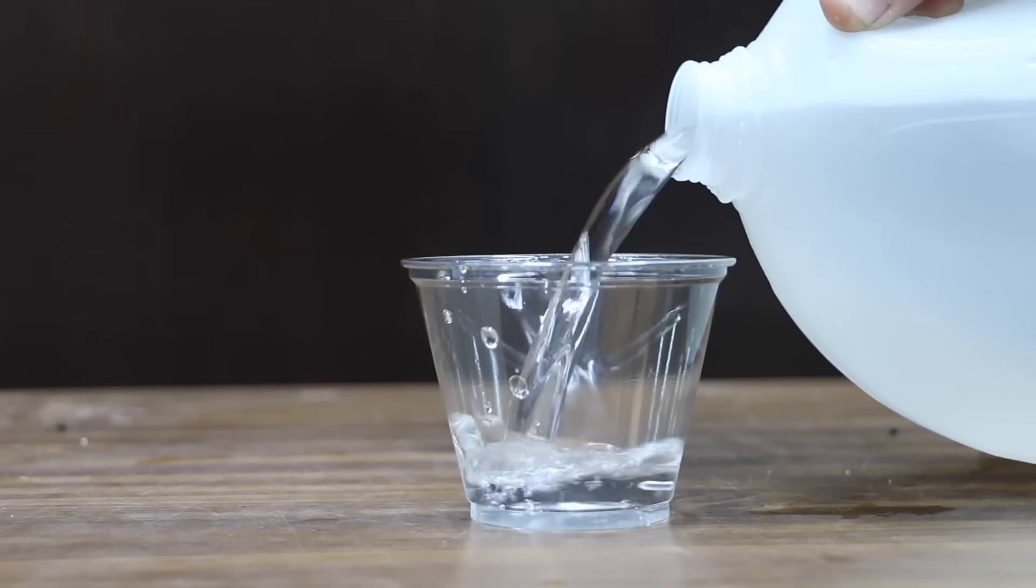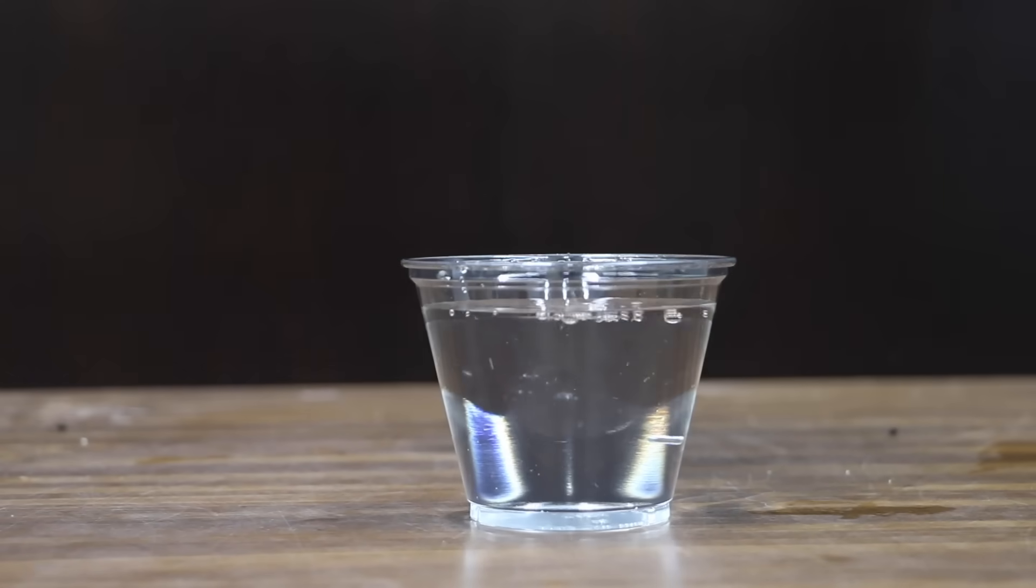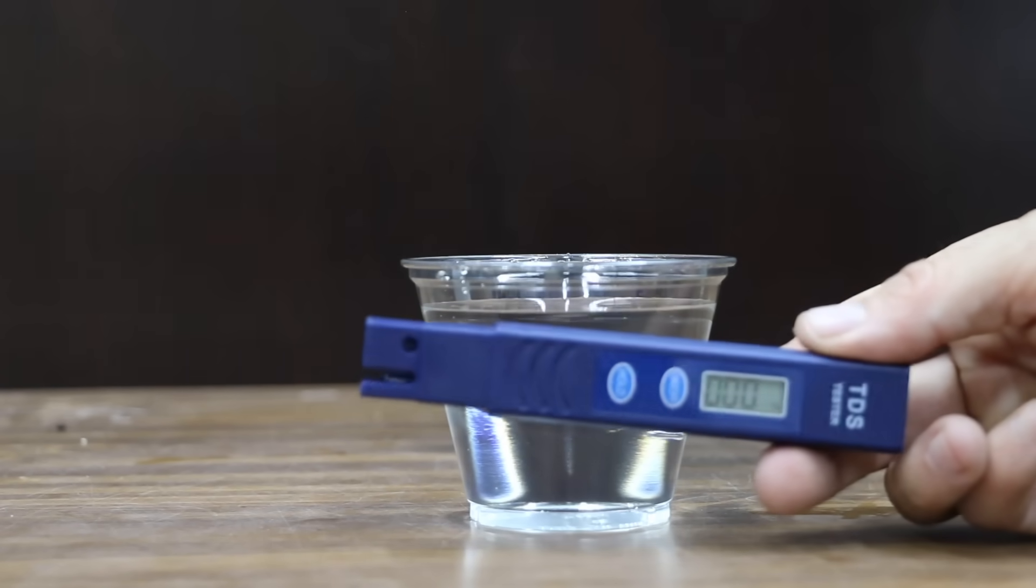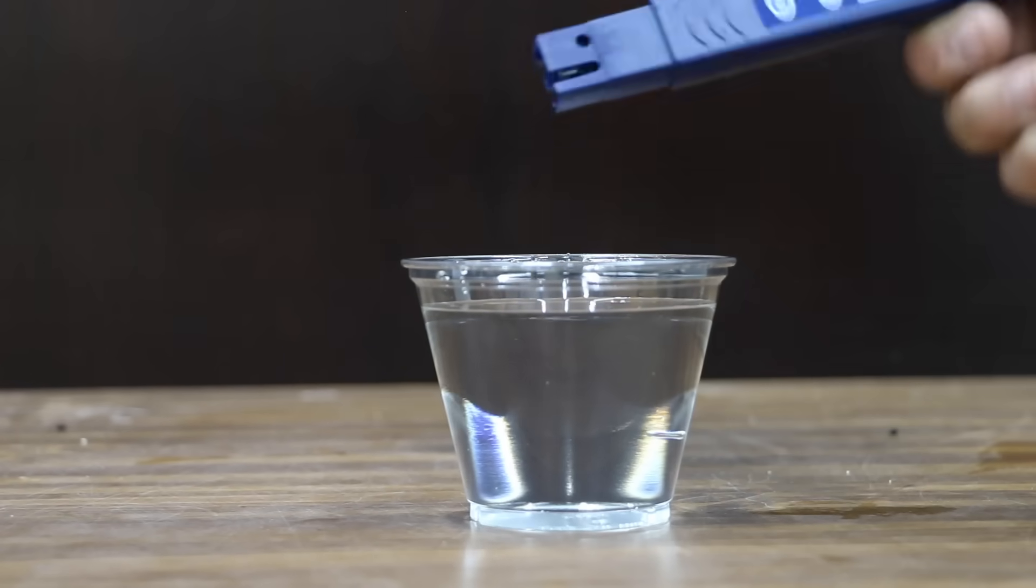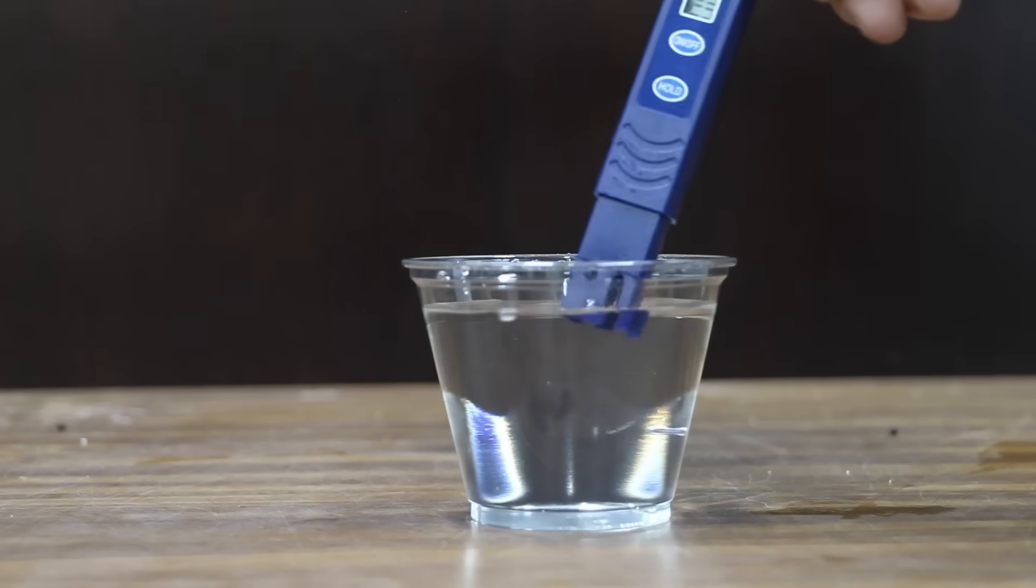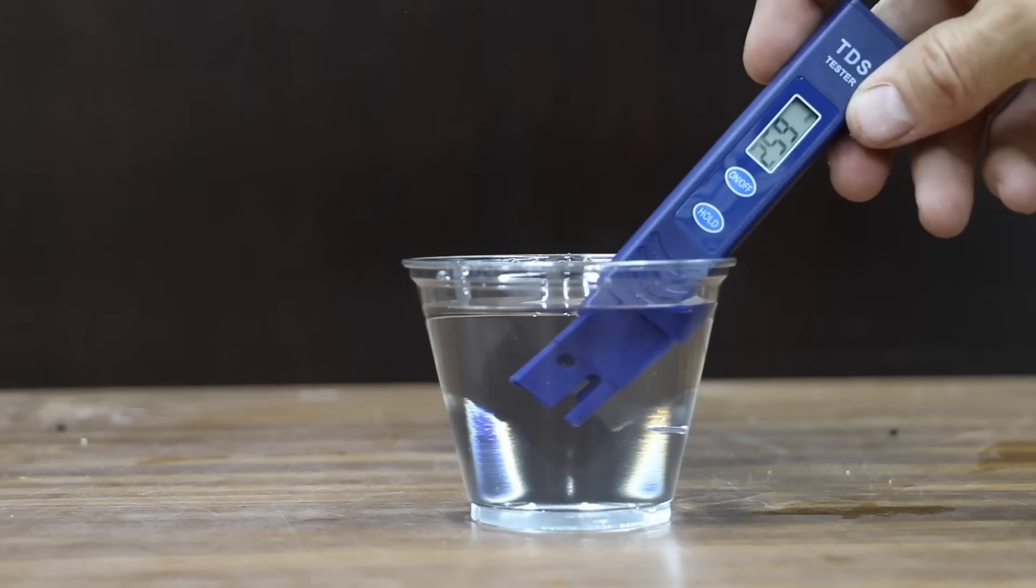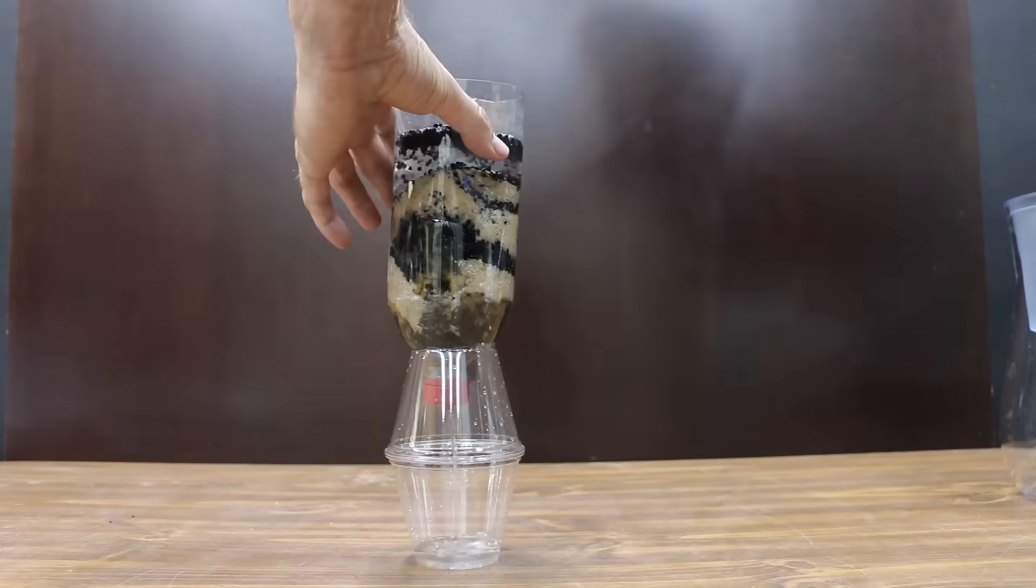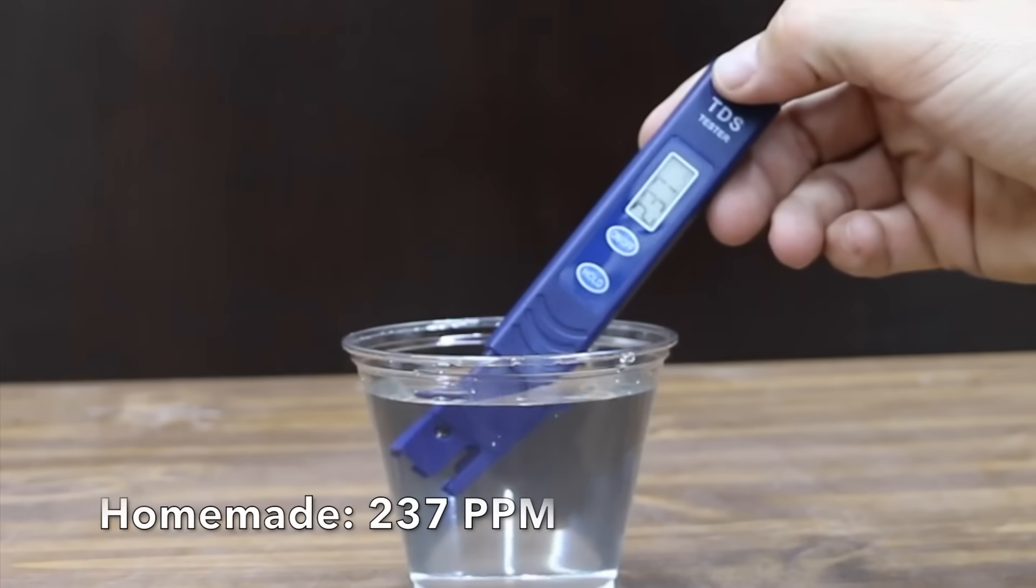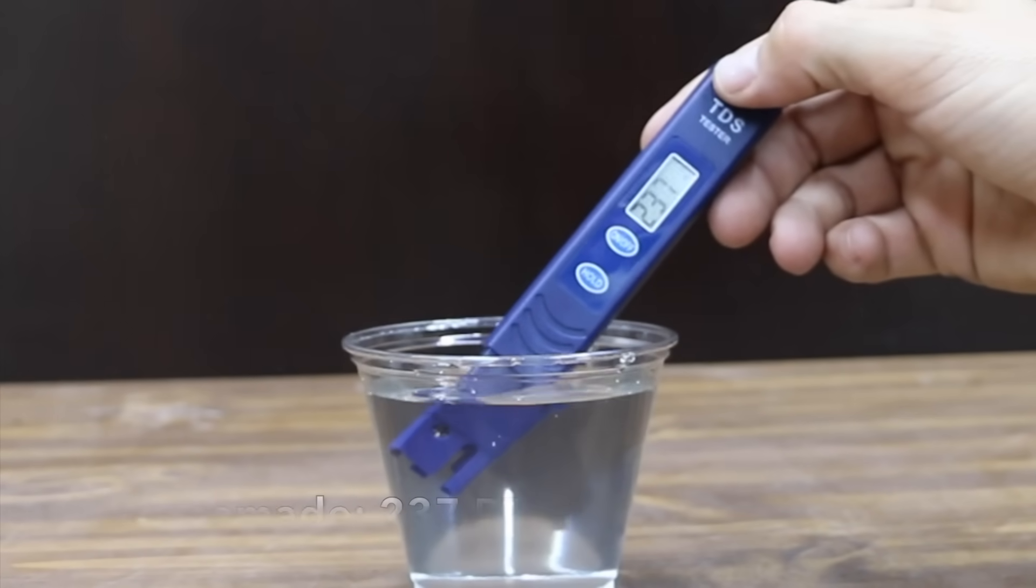To serve as our baseline, I'll be using some tap water, which is from the municipal water supply. Let's use a total dissolved solid tester to see the levels of minerals, salts, and metals dissolved in the water. Water with a high TDS isn't necessarily bad, it just means that the water has some stuff in it. 259 parts per million. Let's go ahead and test the homemade filter to see how it performs. 237 parts per million, so there's definitely a little bit of improvement.